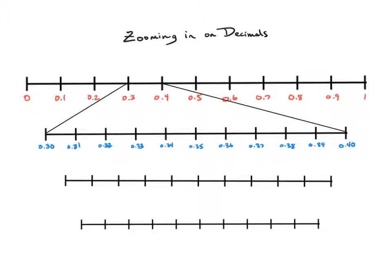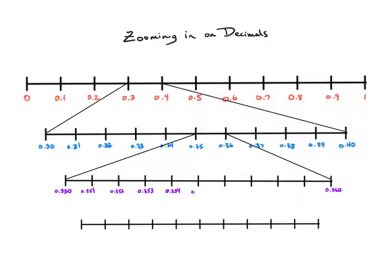I have the same question as before: what if I zoomed in on another section? For example, what numbers are represented by this gap? My new number line starts at thirty five hundredths and ends at thirty six hundredths. To figure out what I'm counting by, I make an equivalent decimal: three hundred fifty and three hundred sixty thousandths. Because this number line is again split into ten sections, I'm counting by thousandths this time — three hundred fifty one, three hundred fifty two, and so on.